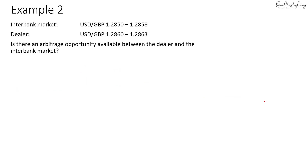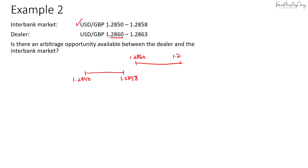Now let's look at another scenario. The interbank market rate is still the same, between 1.2850 and 1.2858, but the dealer quote is now different — it starts from 1.2860 to 1.2863. So again there is a gap between the two quotes, and in this case there will be an arbitrage opportunity.